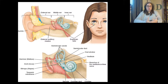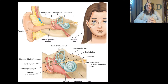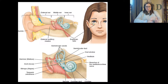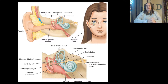Looking at the picture: the external ear runs from the auricle or pinna through the auditory canal to the tympanic membrane. The middle ear contains the malleus (hammer), incus (anvil), and stapes (stirrup). Those small bones vibrate in fluid to send signals to the inner ear. You can see the semicircular canals at the top, the cochlea, and the branches of cranial nerve eight, the vestibulocochlear nerve.